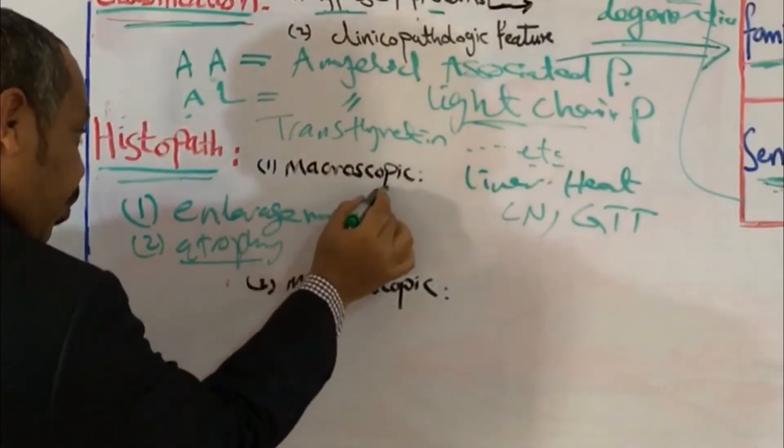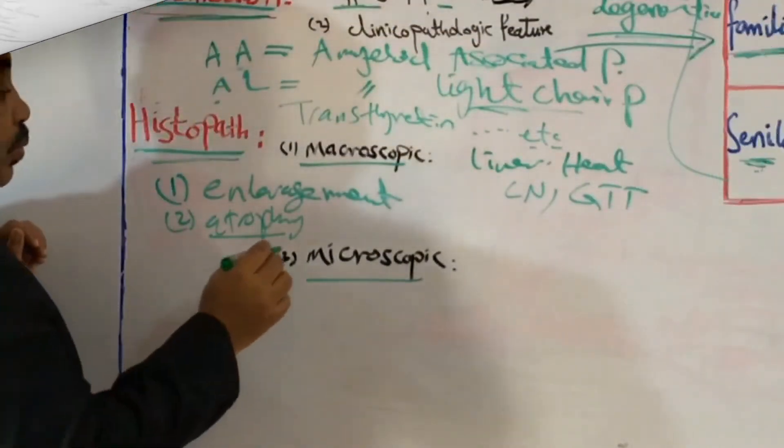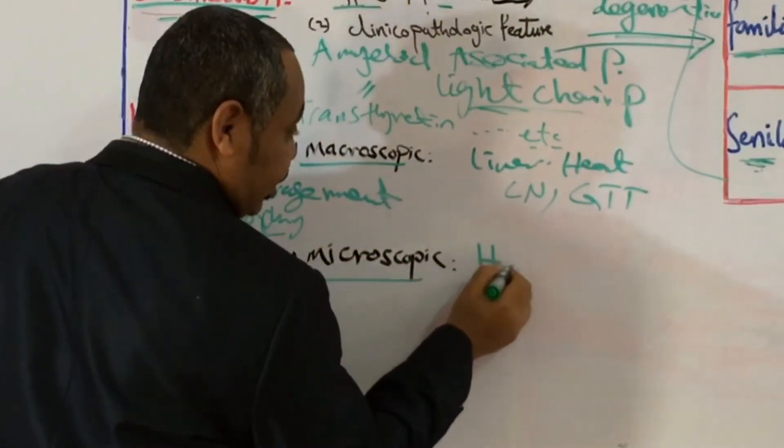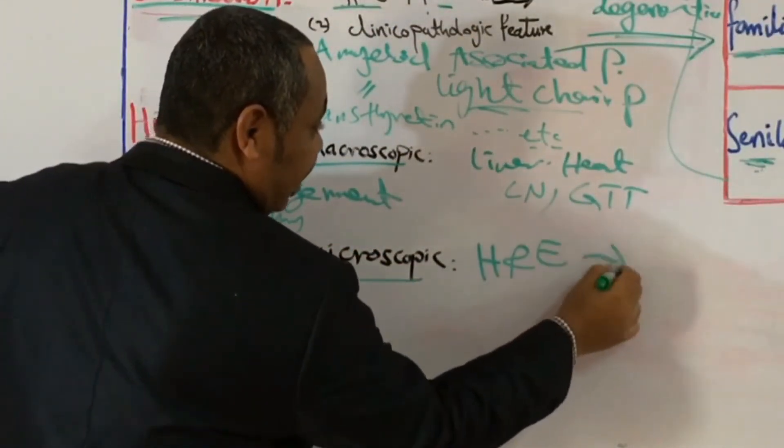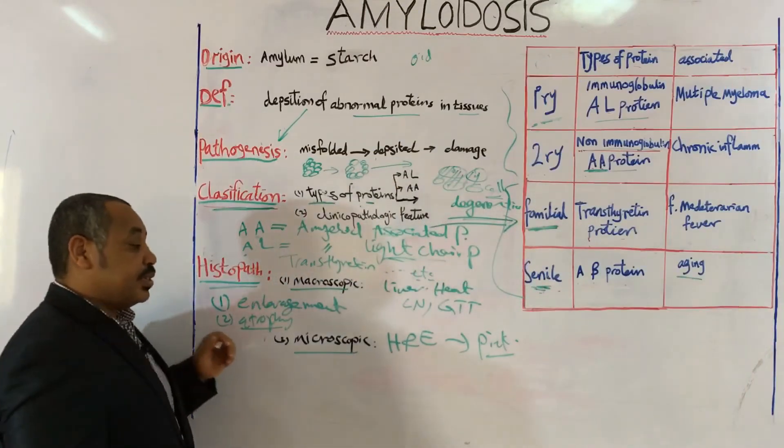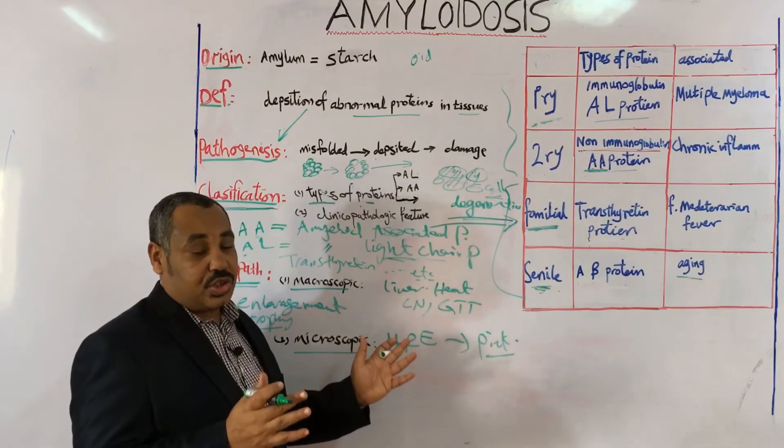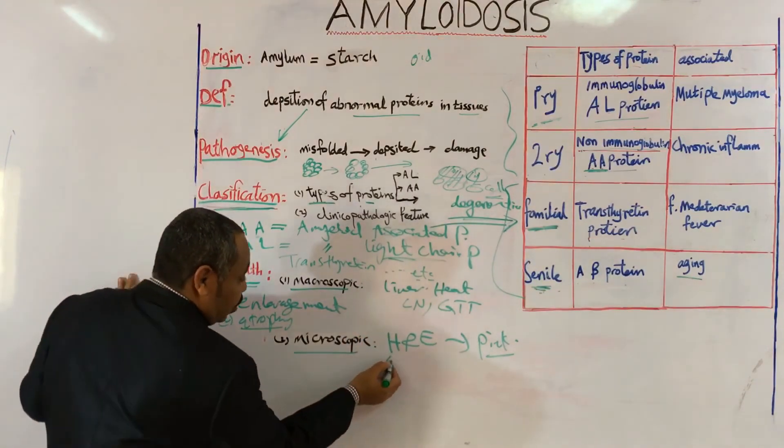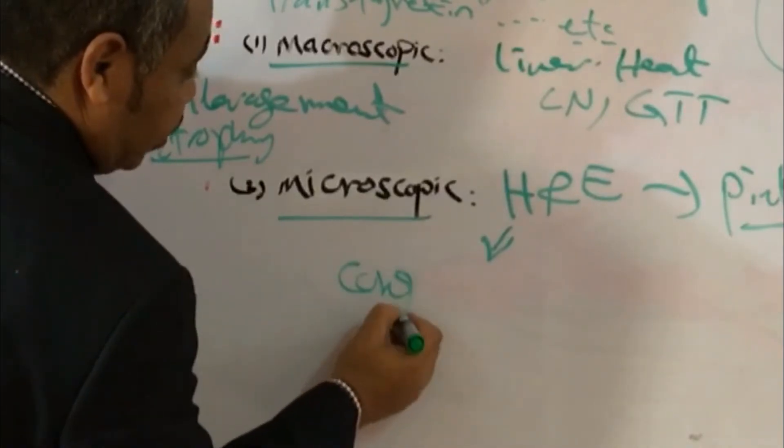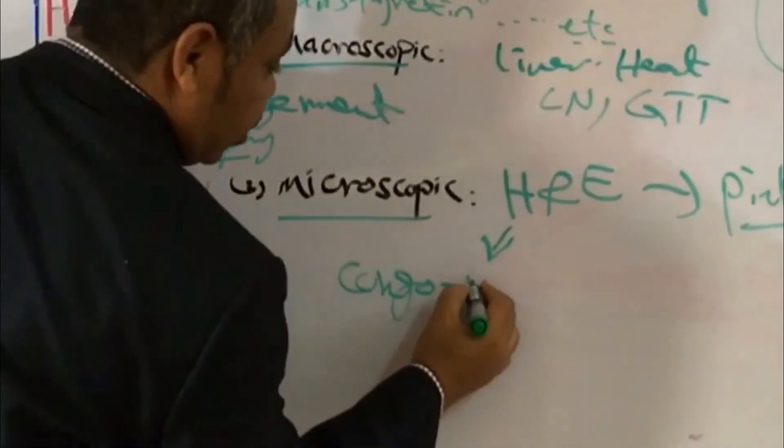This point is macroscopically. But under the microscope, if you stain it with the routine stain H and E, you will find that it is pink color. Actually it is similar to collagen and other fibers. So you cannot differentiate which is which. So you have to do another stain, which is called Congo red. So Congo red is a special stain for amyloidosis.